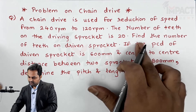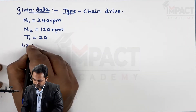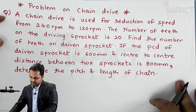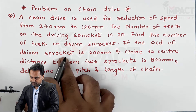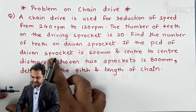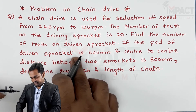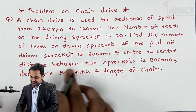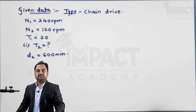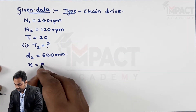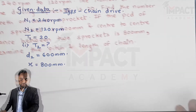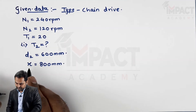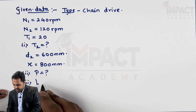The question asks us to find the number of teeth on the driven sprocket, denoted as T2. The PCD of the driven sprocket is denoted as D2, which is 600 mm. The center-to-center distance between the sprockets is 800 mm, denoted by X. We have to determine the pitch and the length of the chain.